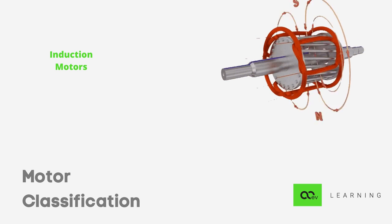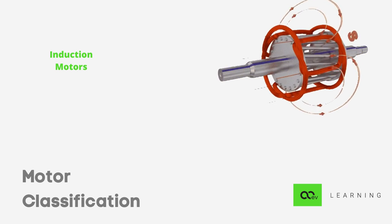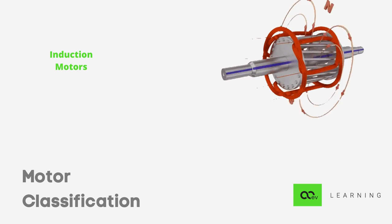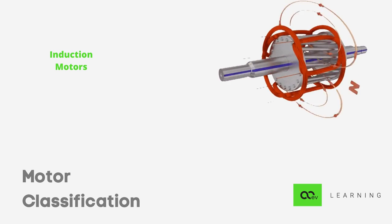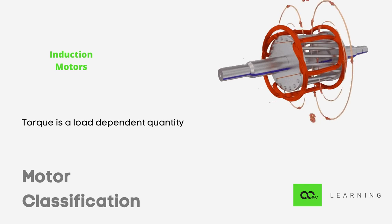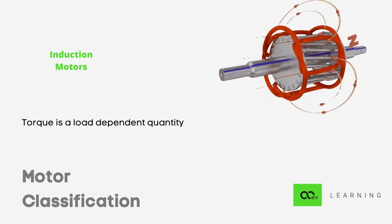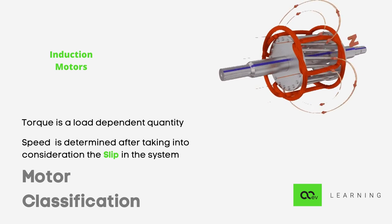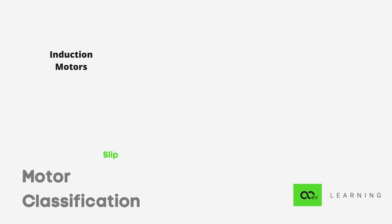If a current carrying conductor is placed in a magnetic field, it experiences a force. The series of interactions of the rotor current and the RMF results in a circular motion of the rotor. The torque of the motor is a load-dependent quantity and the speed of the rotor is determined after taking into consideration the slip in the system.